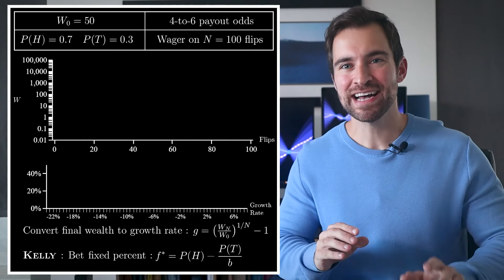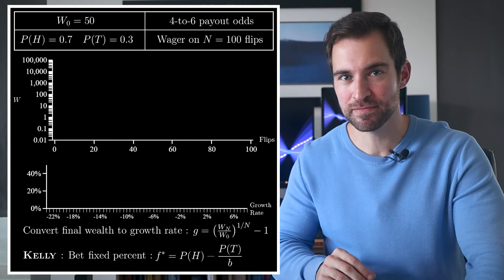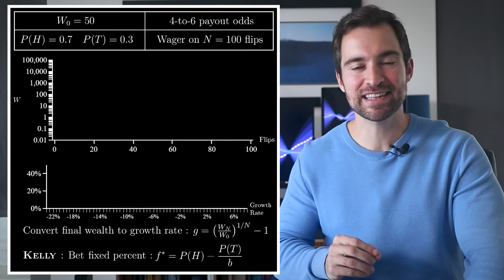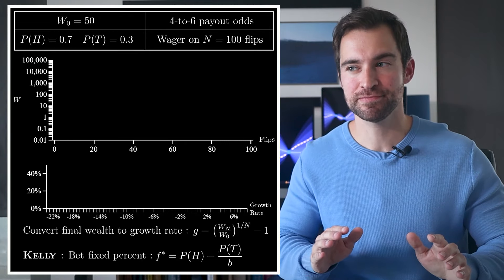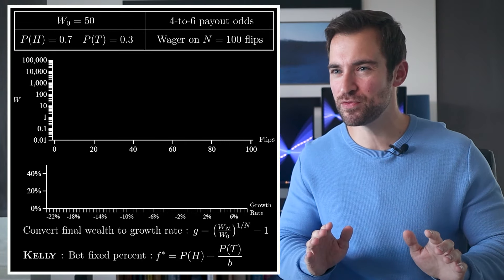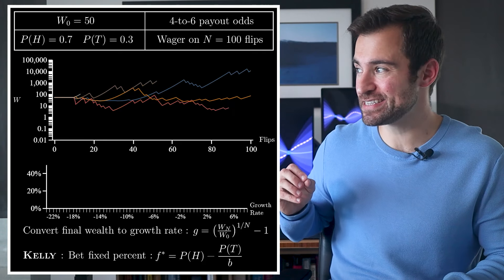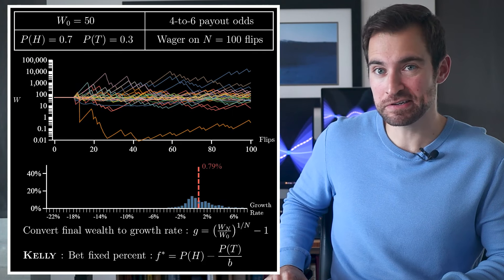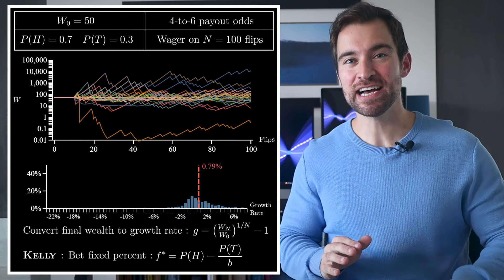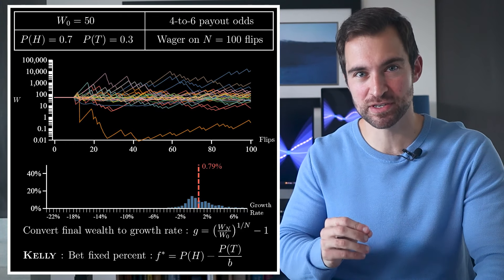But after the 10th flip, you'll use the flips you saw to estimate the true probability. Then you'll plug that into the Kelly formula to determine your wager. Seems like something we do in reality, right? Well, in that case, we get these outcomes. Our average growth rate has fallen to around three quarters of a percent, which would yield a wealth of about $100.